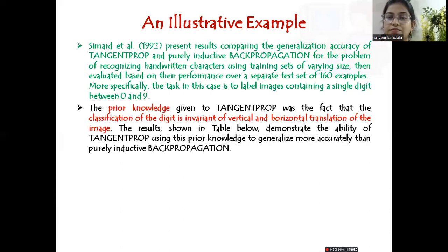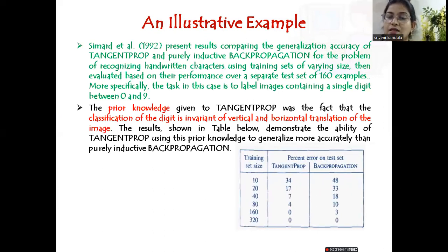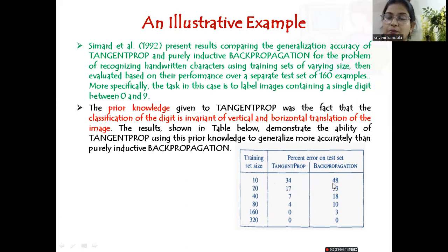The prior knowledge given to Tangent Prop was that classification of a digit is invariant to vertical and horizontal translation, so the derivative was set to zero. The results show that Tangent Prop always had less error than back propagation. With a training set of size 10, Tangent Prop gave 34% error versus 48% for back propagation; with a training set of 80, Tangent Prop gave 4% error versus 10% for back propagation.